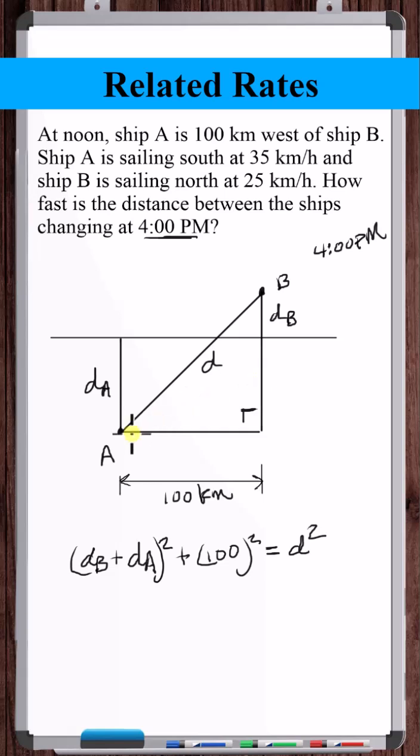Now we have a relation between the position of A, the position of B, and the distance between them. But since we're trying to find the rate of change of D at any moment in time, let's take the derivative of this equation with respect to time. Now we're going to do implicit differentiation.